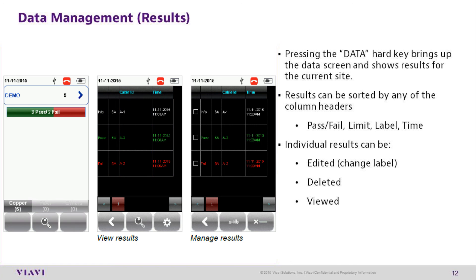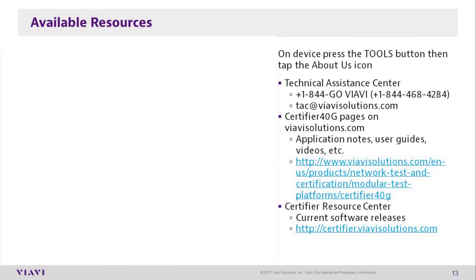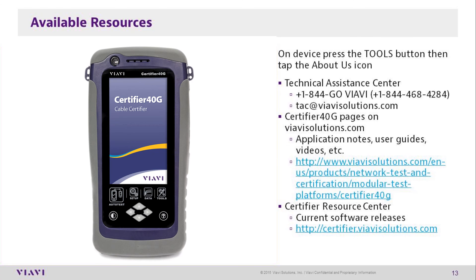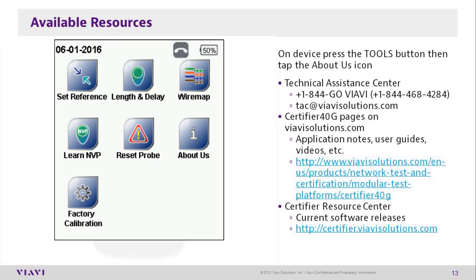Individual results can be edited to change the label name, deleted, or viewed. Additional help resources are available on the unit. Press the Tools Hard Key, then tap the About Us icon.